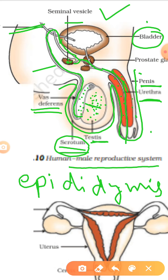The scrotum keeps the testes outside the abdominal cavity to maintain a temperature lower than body temperature, suitable for maturation of sperms. Sperms which come into the seminal vesicles are not released as sperms only — the wall of the seminal vesicles secretes some secretion. There is also the prostate gland, present at the junction of the urinary passage and the seminal vesicles passage, which also secretes fluid helpful for the survival and mobility of the sperms.